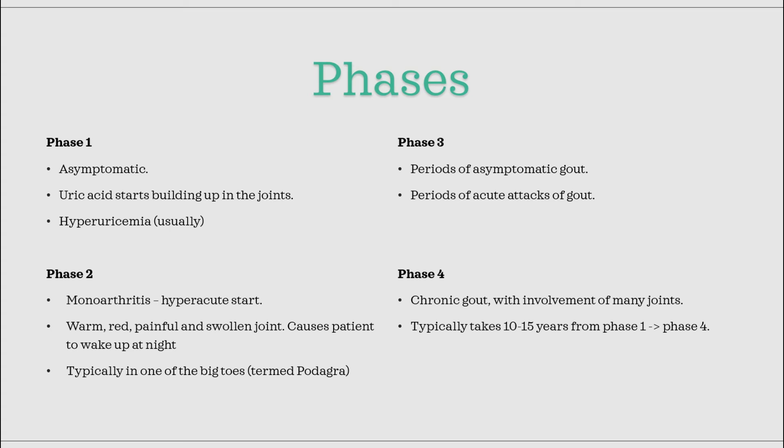Phase three consists of periods of no symptoms, with some periods of acute arthritis occurring now and then. In phase four, the disease has now progressed to chronic gout, there will be involvement of many joints, and the classically seen tophi start to form. As mentioned earlier, these are painless, hard nodules that form on the joints.